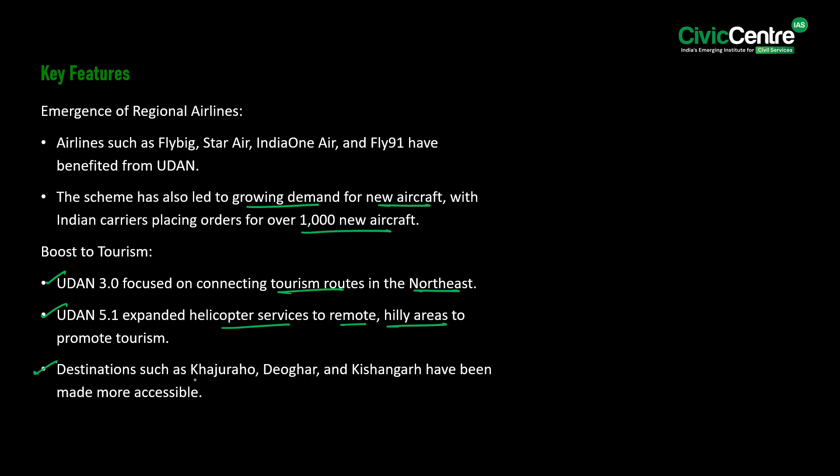Destinations such as Khajuraho, Deoghar, and Kishangarh have been made more accessible. UDAN has operationalized 86 aerodromes across 34 states and union territories. Airports in locations like Darbhanga, Jharsuguda, and Tezu have flourished, serving thousands of passengers and contributing to regional economic growth. The number of operational airports has doubled from 74 in 2014 to 157 in 2024, with a target of reaching 350 to 400 by 2047.